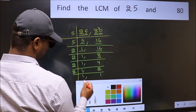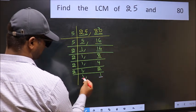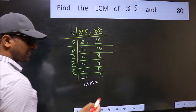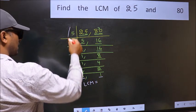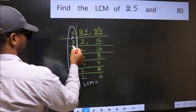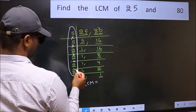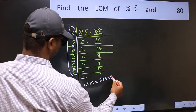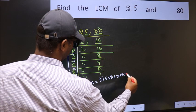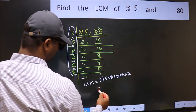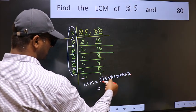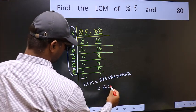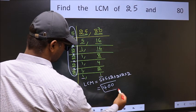We got 1 in both places, so we can now find our LCM. The LCM is the product of all the divisors: 5 times 5 times 2 times 2 times 2 times 2 times 2. When we multiply these numbers, we get 400. So 400 is our LCM.